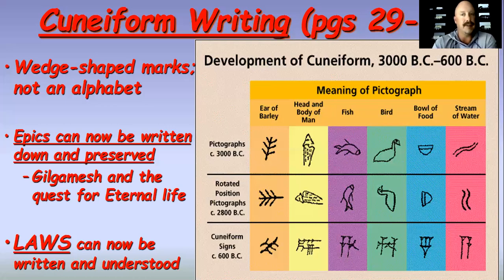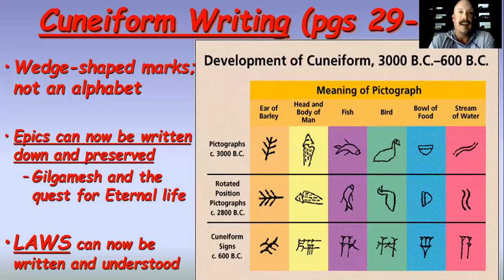For instance, fish and bird look pretty similar — except one wedge is on the left side and one is on the right side, with a squiggle towards the interior on bird and towards the exterior on fish. It took a long, long time and many years of schooling to remember and know how to draw all of these cuneiform signs perfectly.